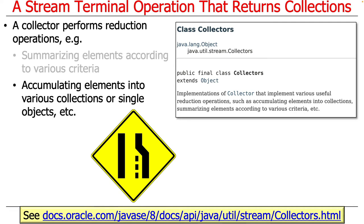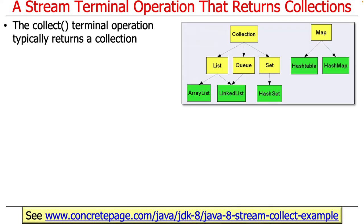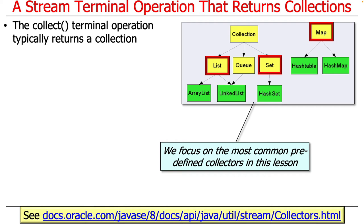The bulk of the collectors, however, accumulate elements in the stream into a bunch of different types of collections or into single objects, and we'll focus our attention largely on those examples. The collect terminal operation typically returns a collection. We're going to focus on some of the most common collections: lists, sets, and maps.